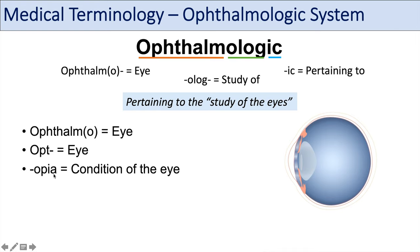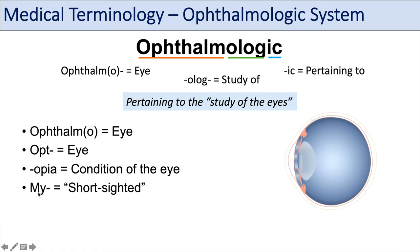Opia — if you've seen my previous lessons, ia usually means condition. So opia means condition of the eye. And then some prefixes more specific to the ophthalmologic system include the prefix my, which means short-sighted. My or myo usually means muscle, but with regards to the ophthalmologic system, my usually refers to short-sightedness.